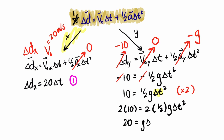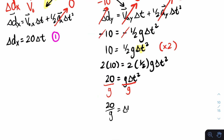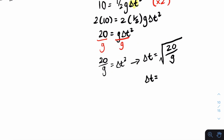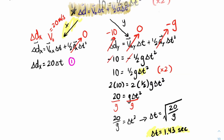To isolate delta t, we multiply both sides by 2: 20 equals g times delta t squared. Then divide both sides by g: 20 over g equals delta t squared. Taking the square root of both sides: delta t equals the square root of 20 over g. Plugging into the calculator, delta t is approximately 1.43 seconds — the time it takes to drop 10 meters.